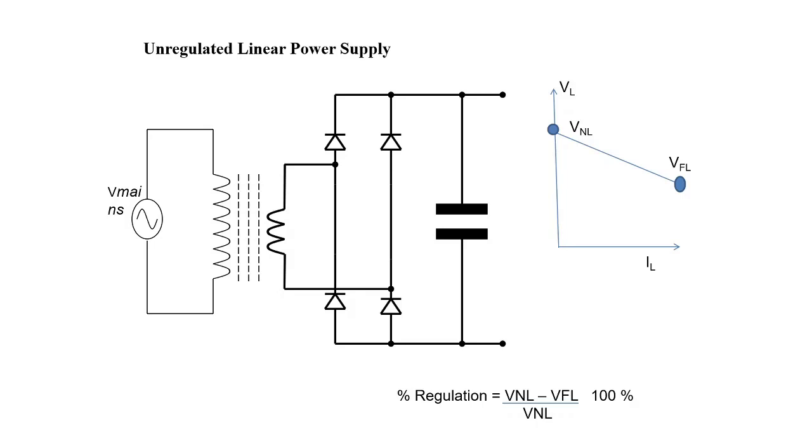Sometimes this figure is also calculated as V no load minus V full load divided by V full load. If it is calculated as V no load minus V full load divided by V no load, it is called as down regulation. If it is calculated as V no load minus V full load divided by V full load, then it is called as up regulation. Mostly down regulation is preferred which will have at the maximum 100% value.